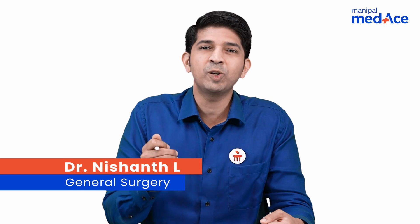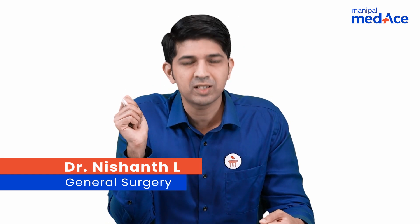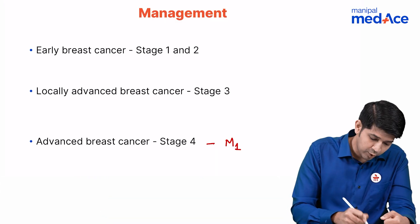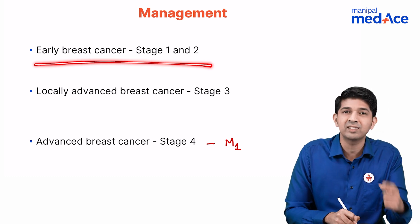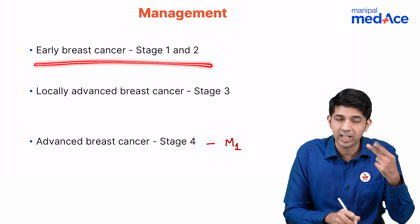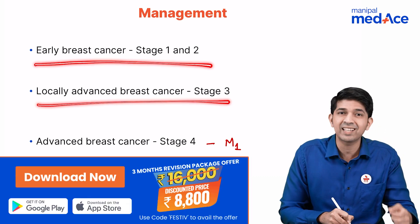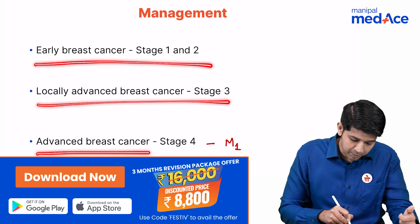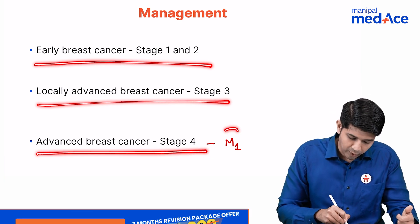Hello everyone. In this video let's learn how to manage a patient with CA breast. Before that, you need to subdivide them as early breast cancer — that is stage 1 and stage 2 — locally advanced breast cancer — that is stage 3 — and advanced breast cancer — that is stage 4.